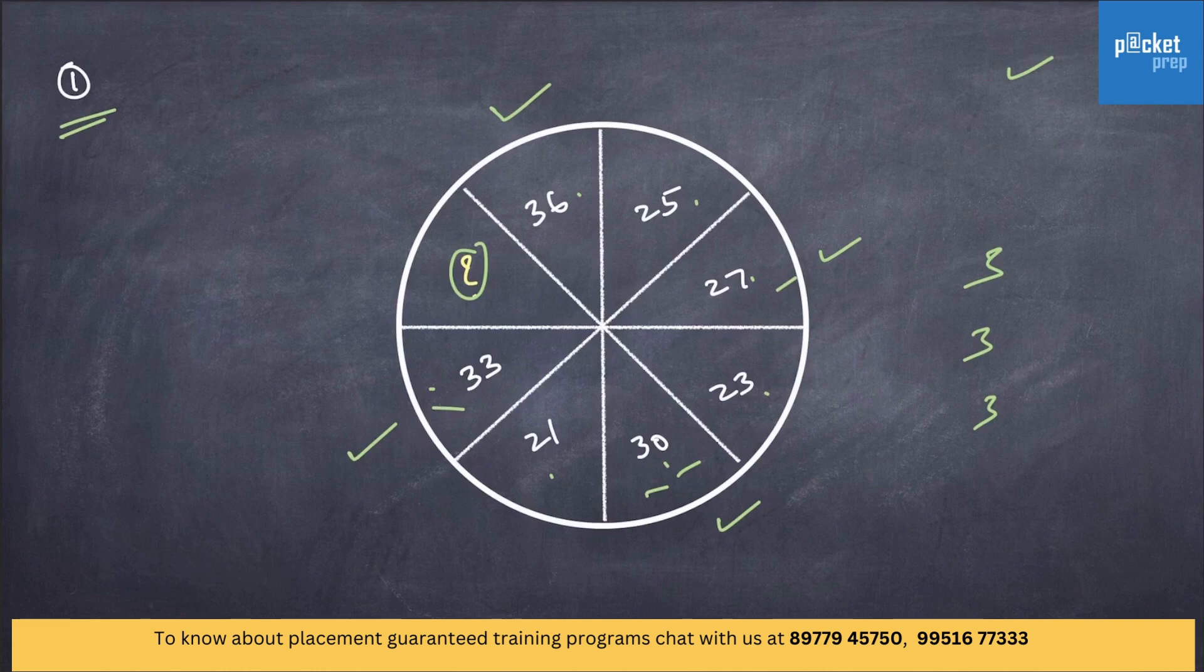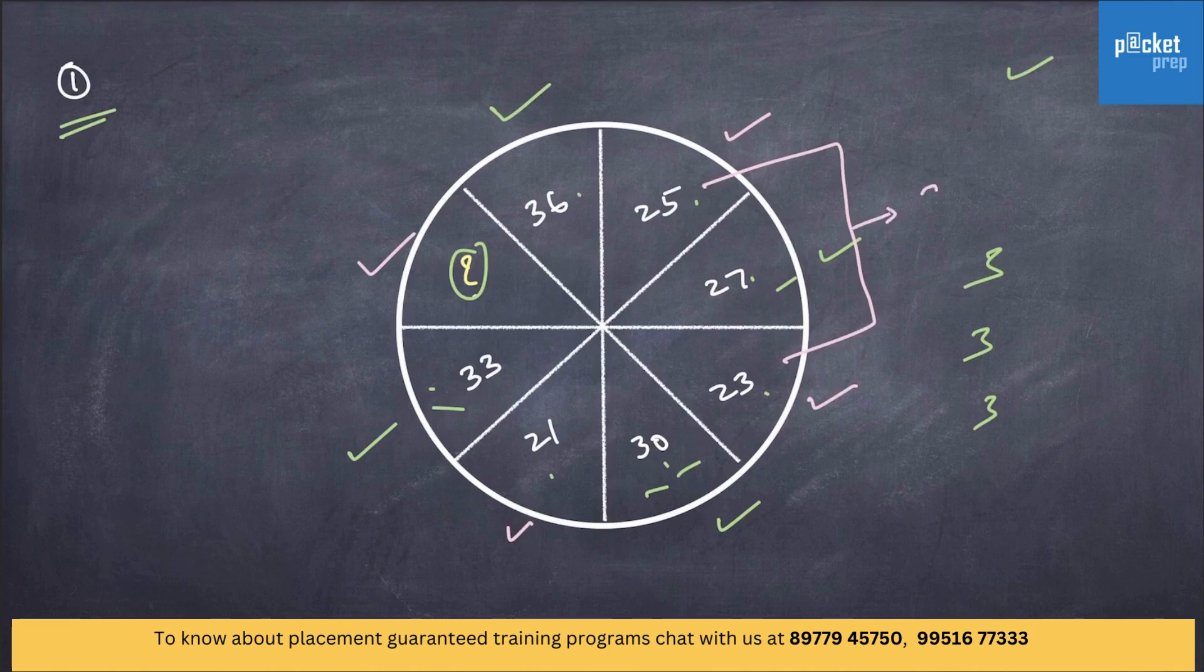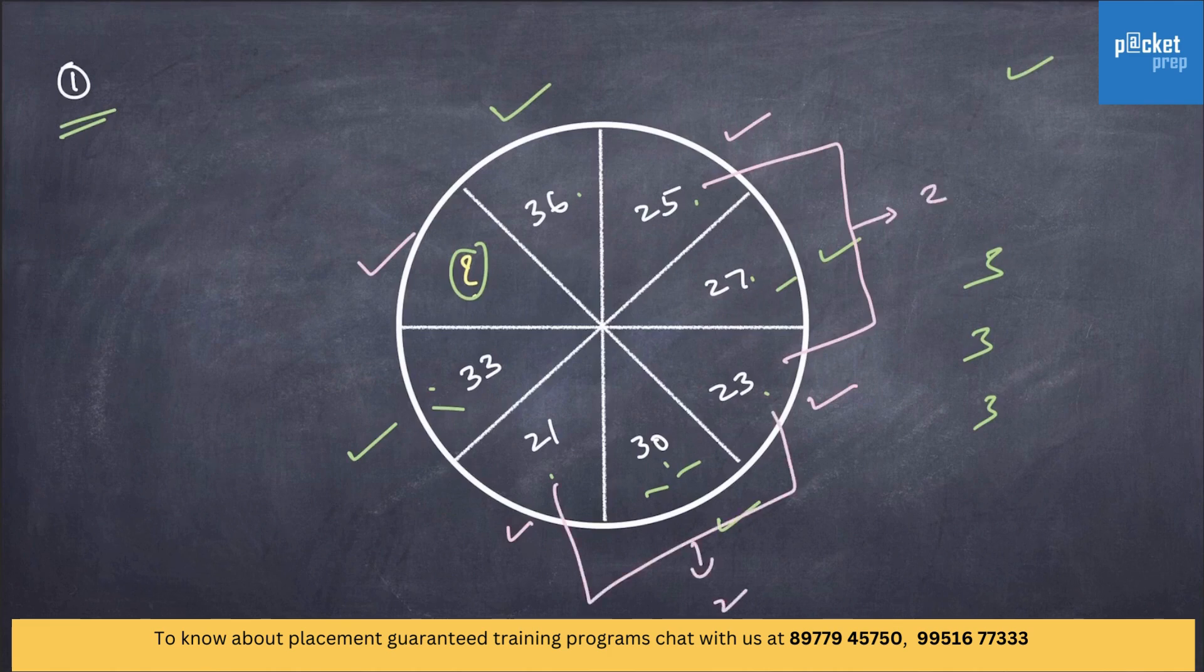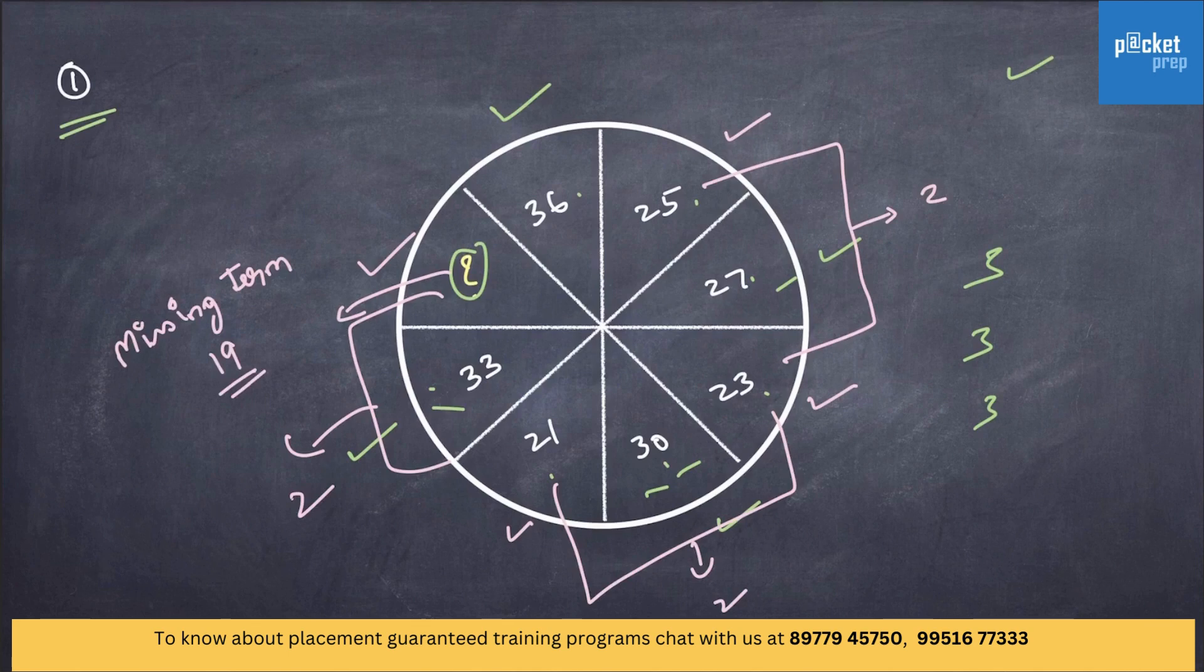Now, let's have a look at the other set of numbers: 25, 23, 21, and the missing term. The difference between 25 and 23 is 2. Similarly, 21 and 23 is also 2. Now, what will be the missing term in order to get the difference as 2? Therefore, the missing term is 19. By finding the difference between alternative numbers, we were able to find out the missing value.